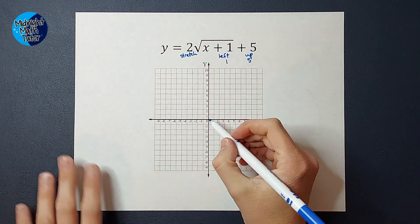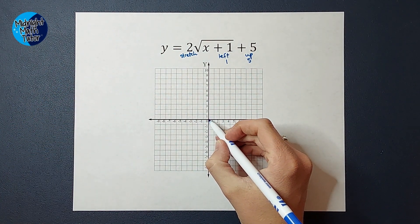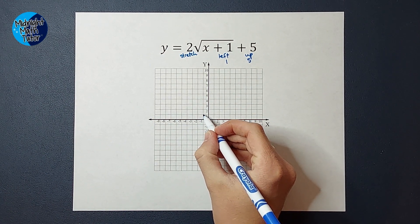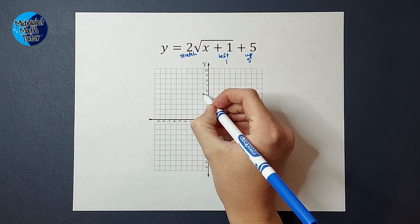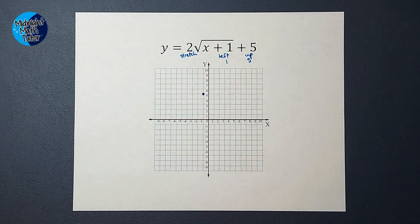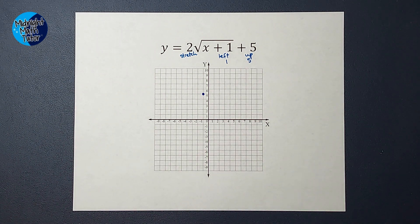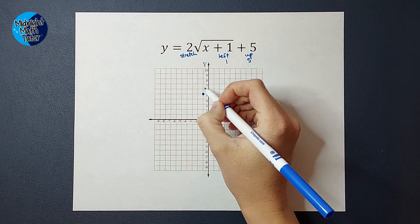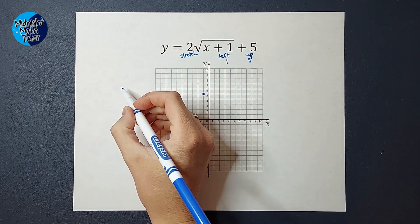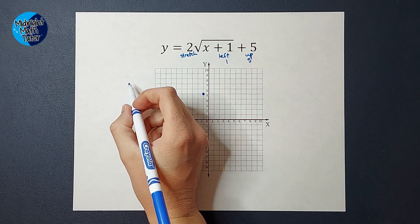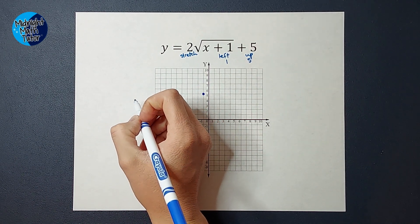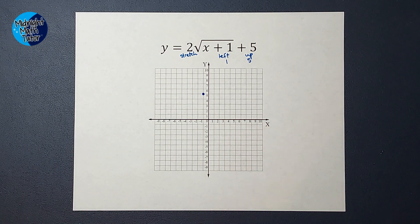My parent graph started at 0, 0, but this one we're going to move to the left one and up 5 — so this is where my new graph starts. From here, some teachers may only want to know that you know where the new starting point is. You draw how the graph goes and write a note on the side that says this graph would have a vertical stretch by a factor of 2. If that's all they want, go ahead and do that and you're done.